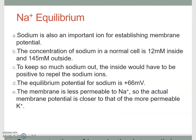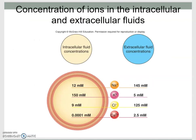Now let's consider sodium. The vast majority of sodium is on the outside of the cell. The concentration gradients are approximately 12 millimoles on the inside and 145 millimoles on the outside. If you plug these numbers into the Nernst equation, you find the equilibrium potential for sodium is about plus 66 millivolts. We're not concerned with chloride or calcium right now.